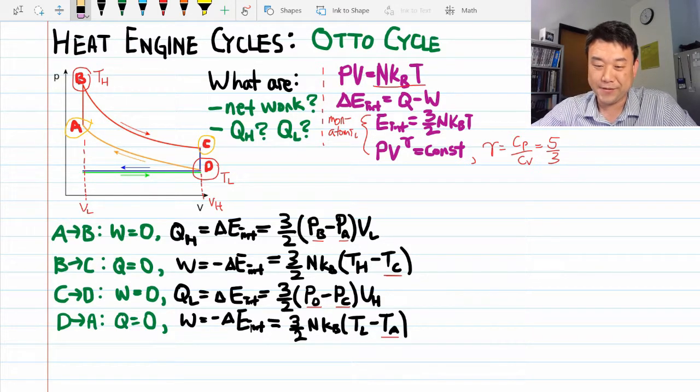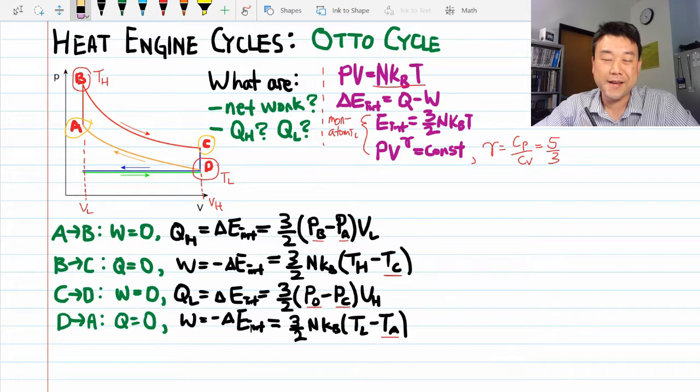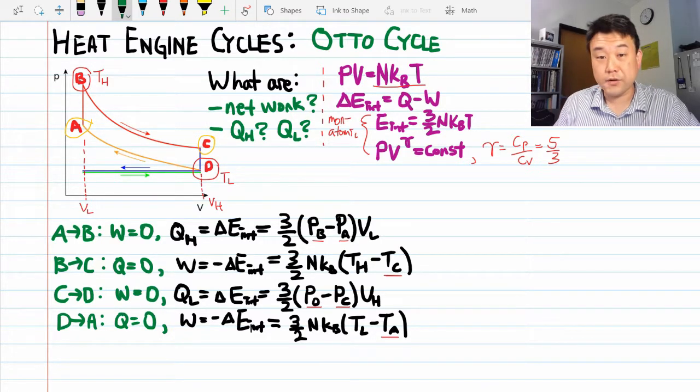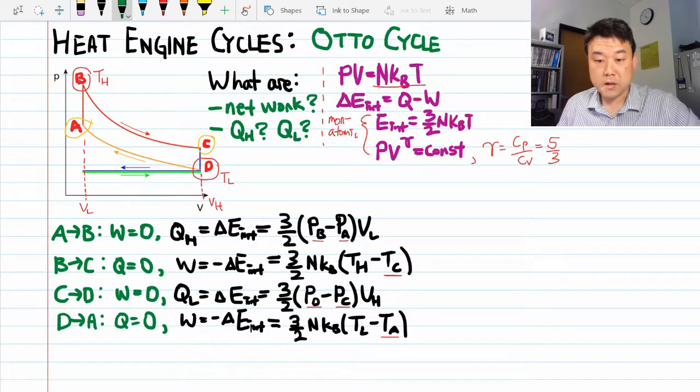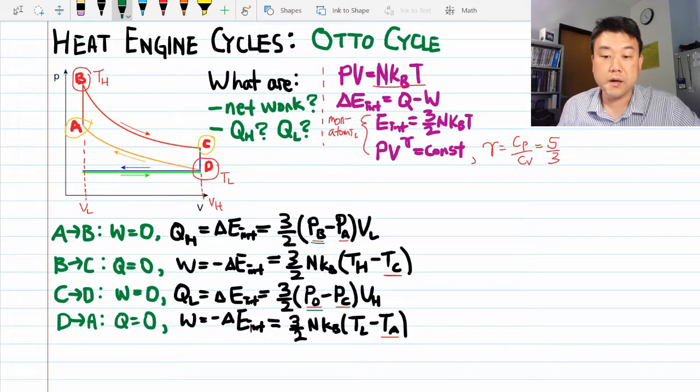But we've introduced one, two, three, four, five, six unknowns that we're going to have to try to get rid of. Some of these are a little bit easier to get rid of. Let me write those down first. Pressures at point B and D are easy to get rid of because I know the temperature and volume at those points.